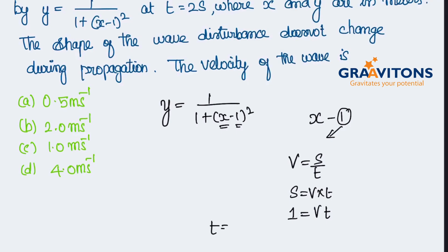Time is equal to 2 seconds. When t=2 seconds, v = 1/2, that is 0.5 meters per second.